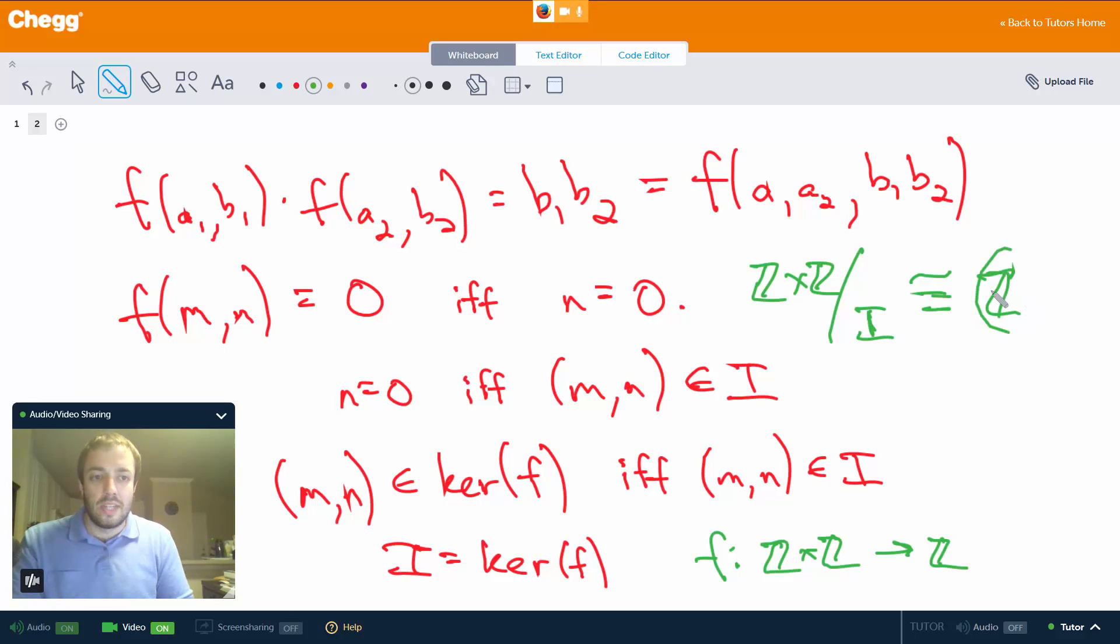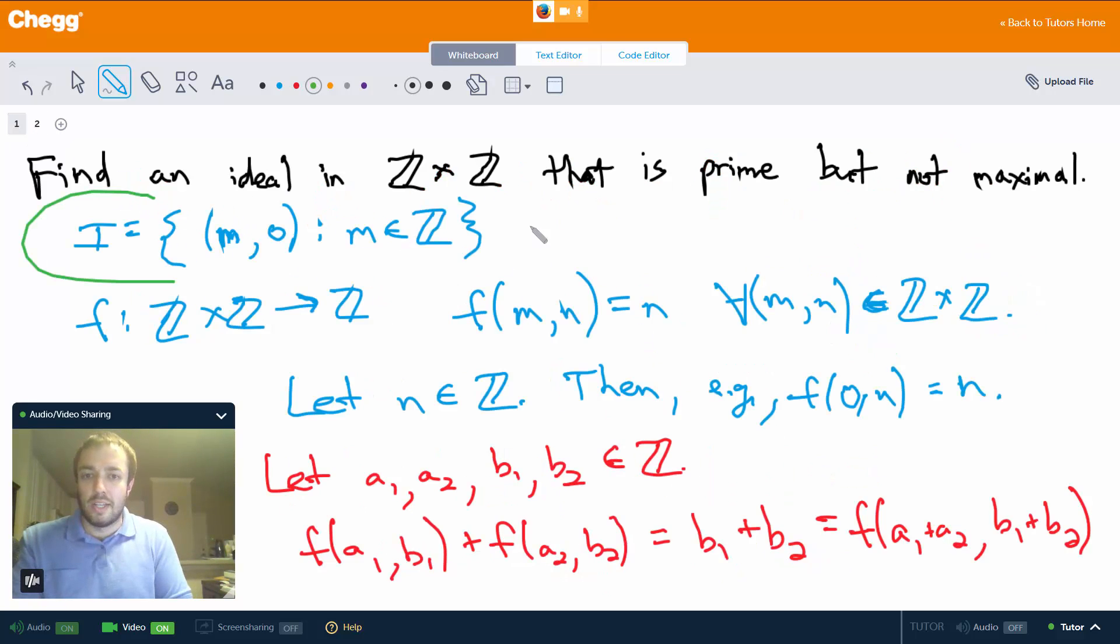Now because Z is an integral domain, that tells us that I is prime. However Z is not a field, therefore that tells us that I is not maximal. So this ideal I is prime but not maximal by the first isomorphism theorem for rings and by properties of how maximal ideals relate to fields and how prime ideals relate to integral domains. So again, this is an integral domain which means this is prime, and this is not a field which means this is not maximal. So this ideal I is an example of a prime ideal that's not maximal.